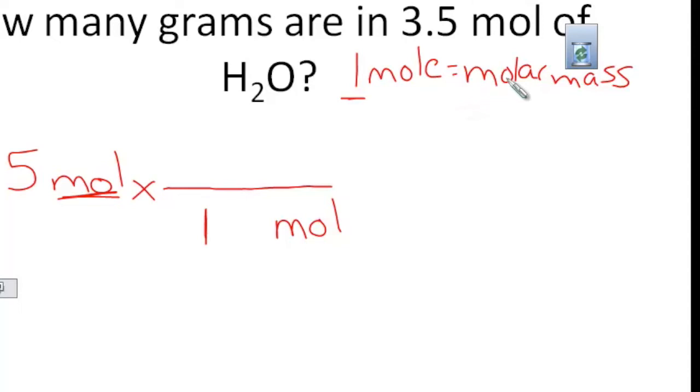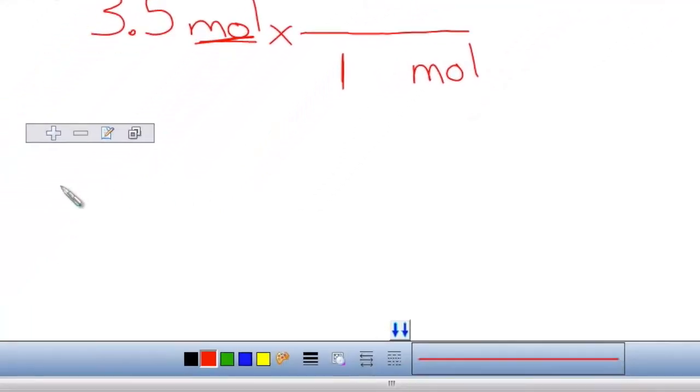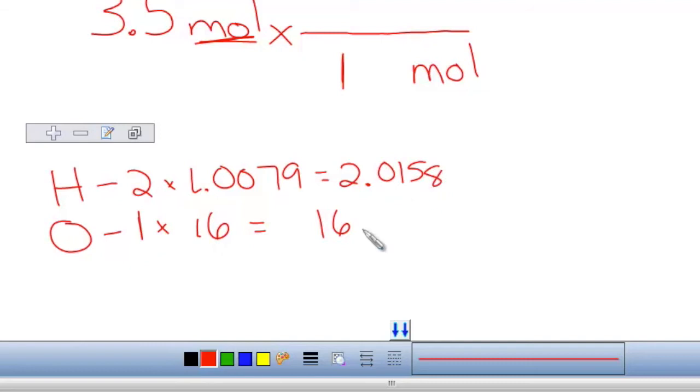Now, that is equal to the molar mass of H2O. So we've got to go down here real quick and find the molar mass of H2O. So we've got hydrogen. There's two of them. We have one oxygen. We're going to multiply by the molar mass of both of these elements, the mass, the number on the bottom of the periodic table. So we've got 16 and 2.0158. Now we're going to add those up. Get 18.0158 grams.